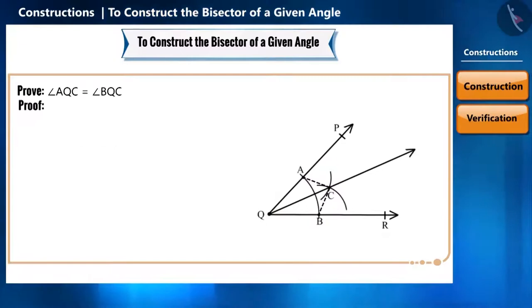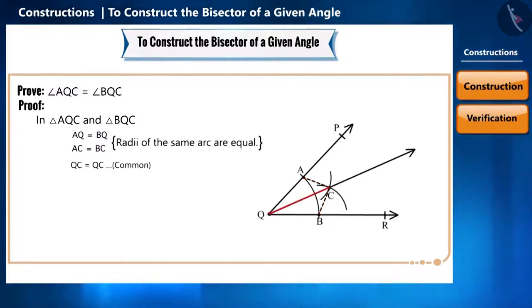Let us start. First of all, AQ is equal to BQ because they are the radii of the same arc. AC is equal to BC because they are the radii of the same arc and QC is the common side. Therefore, triangle AQC and triangle BQC are congruent by the SSS, side-side-side congruence rule.